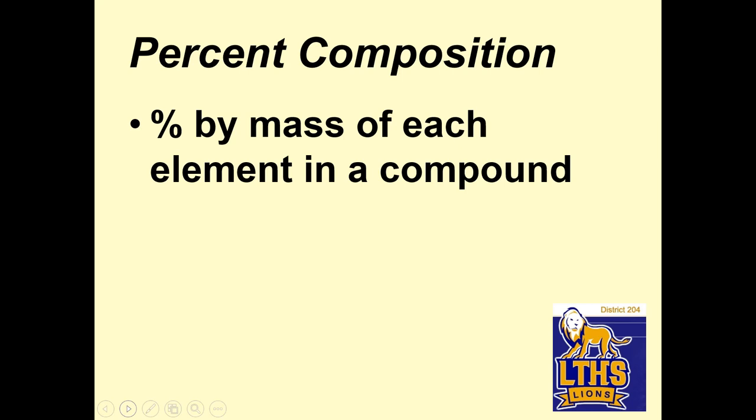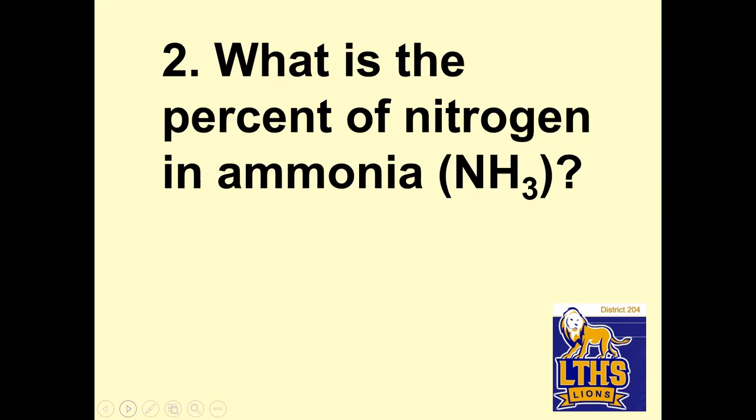Percent composition. So what you do is you find the percent by mass. Percent composition is percent by mass of each element in a compound. So I better get my calculator, my periodic table ready. Uh-oh, my periodic table is not handy, I'm going to have to run and get it. What is the percent nitrogen in ammonia, and ammonia is NH3. So what I'm going to do here, remember, percent is always, always, always part over total times 100%, right?